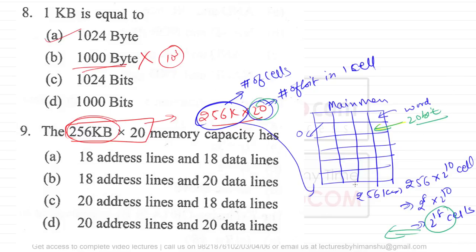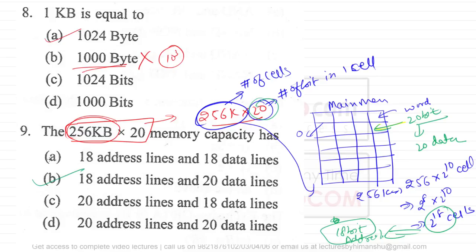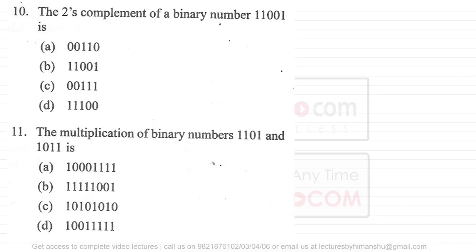Since each cell contains 20 bits, there are 20 data lines. So the answer is 18 address lines and 20 data lines. Options A, C, and D are wrong. Option B is the correct answer.